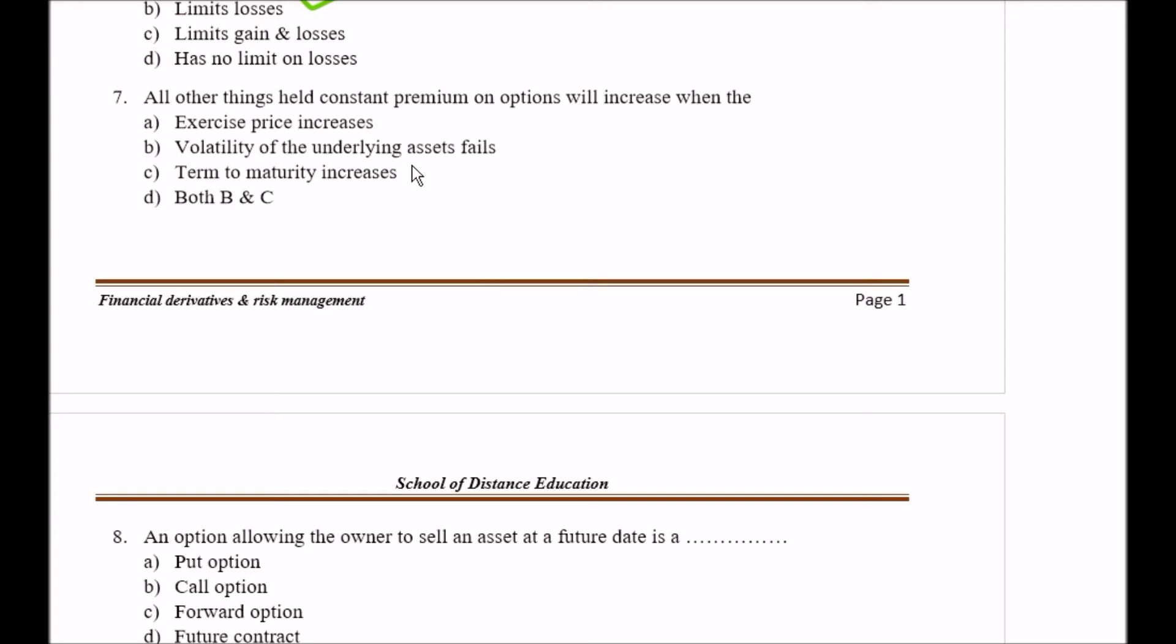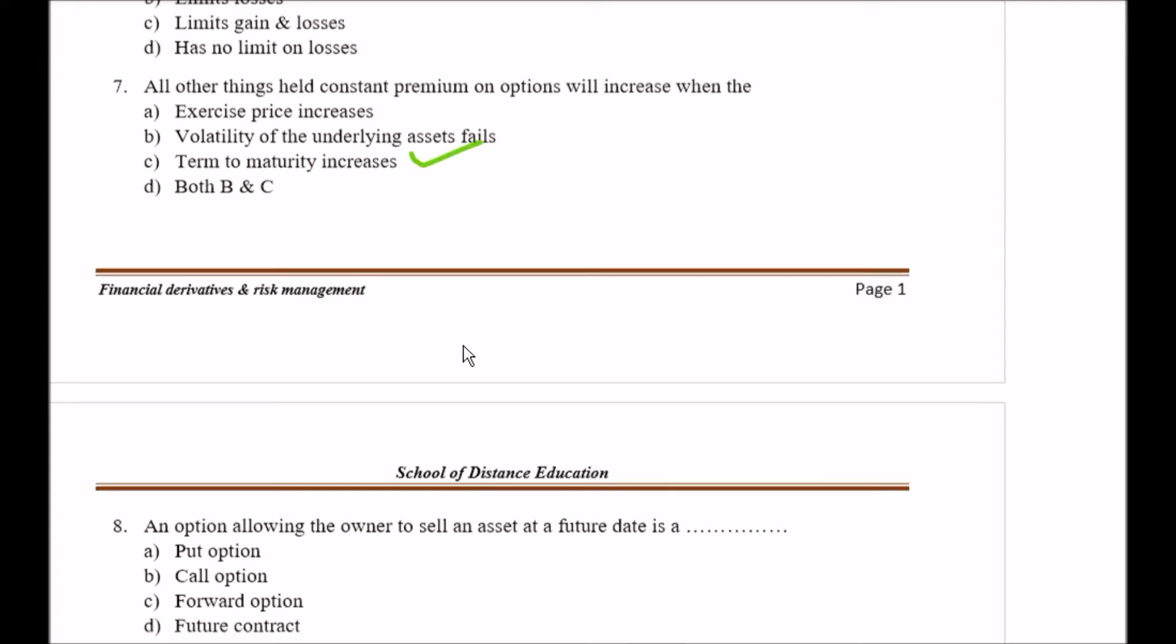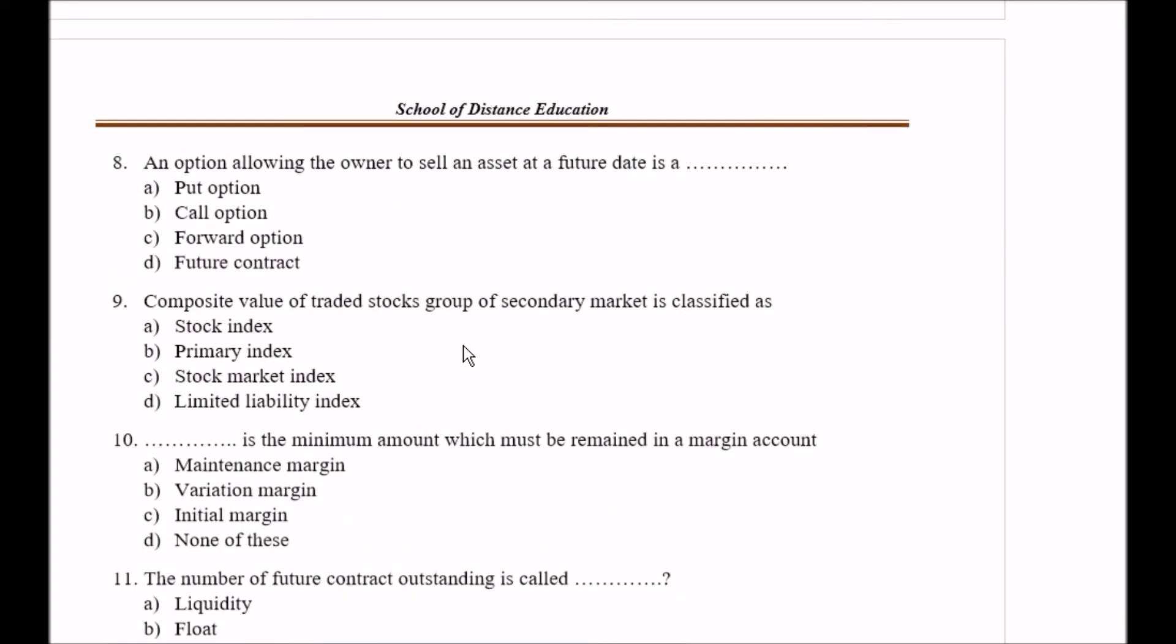Here your right option is Option C, that is term of maturity increases. Question number eight: An option allowing the owner to sell an asset at a future date is: Option A put option, Option B call option, Option C forward option, Option D future contract. Right answer here is Option A.